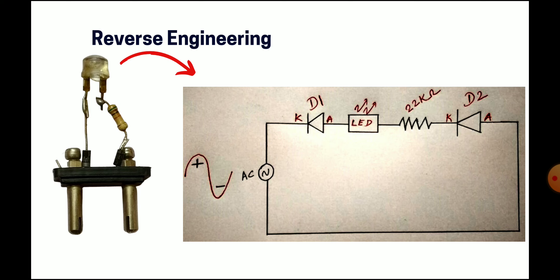Now let us see how the circuit is working. Before studying the working of the circuit diagram, you have to know the component operation of each component involved. There are only two major components: one is the 22 kilo ohm resistor and the diode. The LED is the load — we are all familiar with LED. We only need to consider the diode and the 22 kilo ohm resistor. The diode simply allows current in only one direction and blocks the other direction. The resistor is used to control the flow of current to prevent the load from damage.